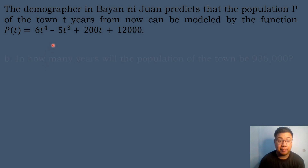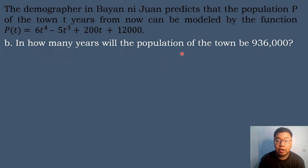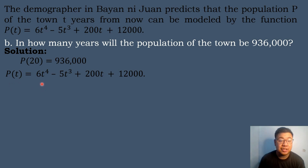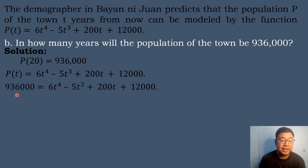Let's have the next question using the same problem: in how many years will the population of the town be equal to 936,000? We set P(t) = 936,000 and use the polynomial function P(t) = 6t⁴ − 5t³ + 200t + 12,000. Substituting: 936,000 = 6t⁴ − 5t³ + 200t + 12,000.